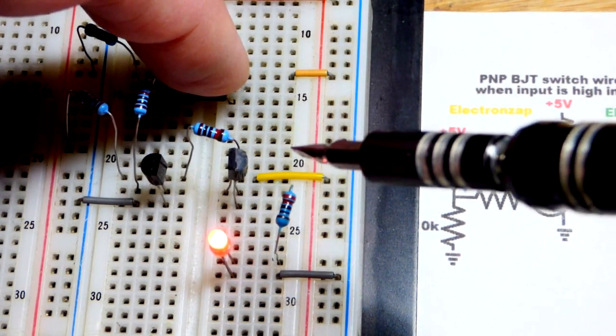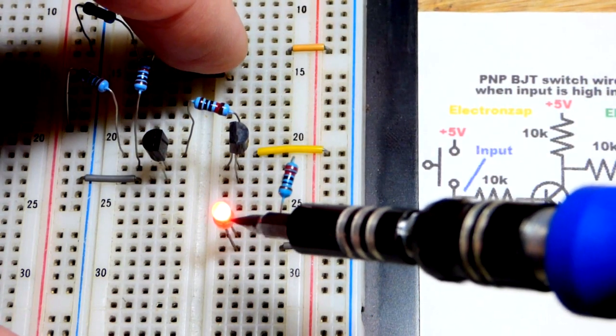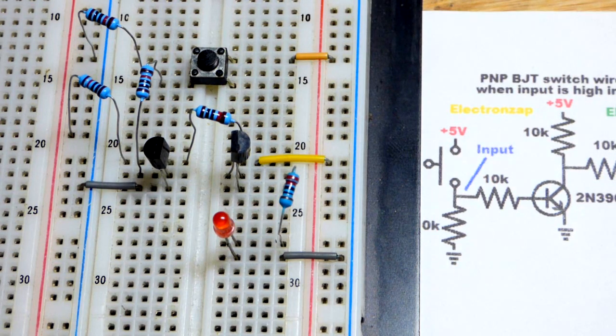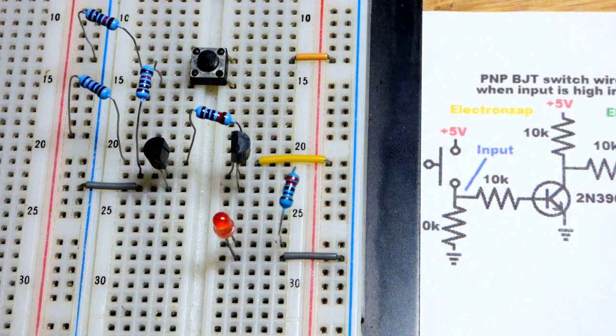And thus, the PNP bipolar junction transistor is fully on, unless I make it lose connection. As long as I close the switch, give a high input, the LED is on. Low input, LED is off. The opposite of how a PNP bipolar junction transistor normally works.